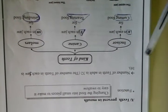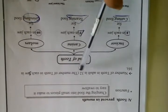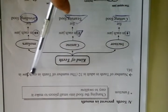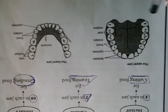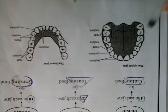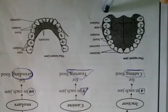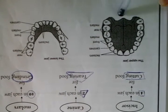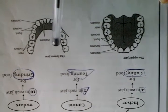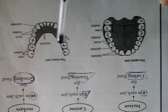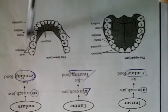As we said previously, the number of teeth in an adult is 32. The number of teeth in each jaw is 16. We have our upper jaw and lower jaw. In the upper jaw, 16 teeth are present. And the lower jaw also has 16 teeth.